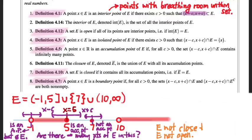Here we have an example of a set which is not open — because there are some points which are not interior; for example, 5 is not an interior point. But it's also not closed, because it doesn't contain all of its accumulation points: it doesn't contain negative 1 or 10. This underscores the common logical fallacy in topology: not every set that's not open is closed, and not every set that's not closed is open. Sets can be neither, like this one. Sets can also be both open and closed, but there's a very small universe of sets that can be both.